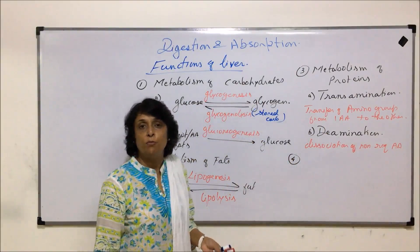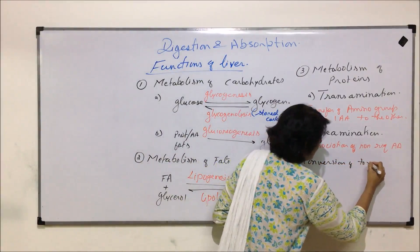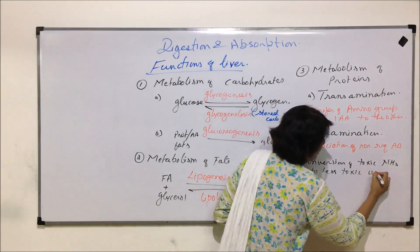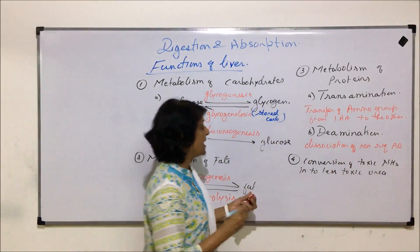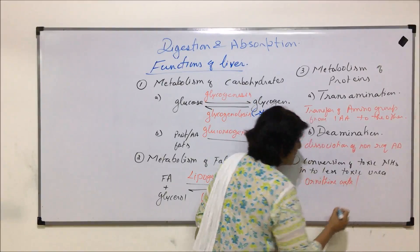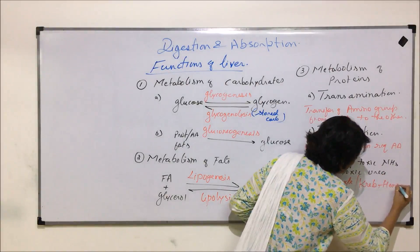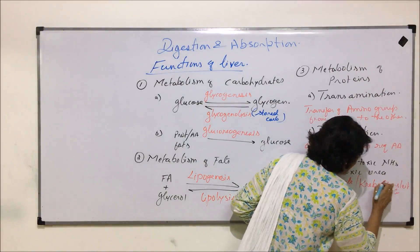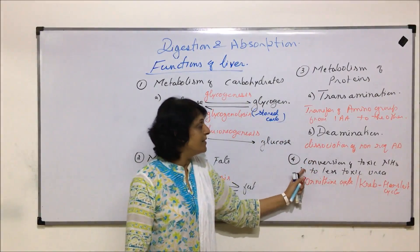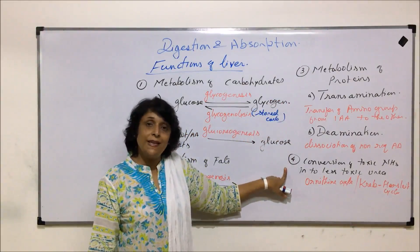The liver helps in the conversion of toxic ammonia into less toxic urea. The reaction cycle which takes place is known as the ornithine cycle, also named after the scientist as the Krebs-Henseleit cycle. We study this cycle in the excretory system where we understand how ammonia is converted into urea.